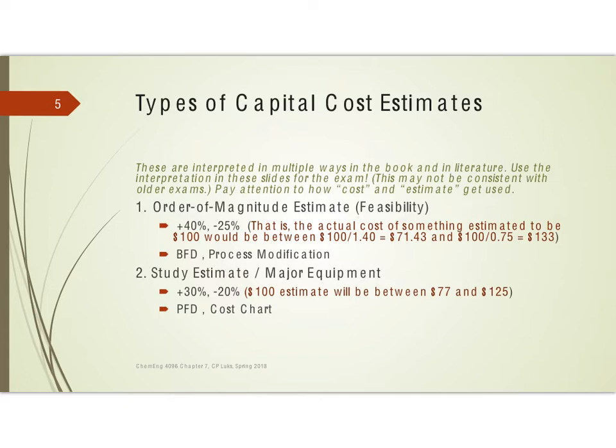...then you're going to take that $100 estimate and divide by 1 minus 0.25, or 0.75, to get $133 as the upper end. So we would expect to be plus or minus about $30 at this phase for a $100 cost estimate.